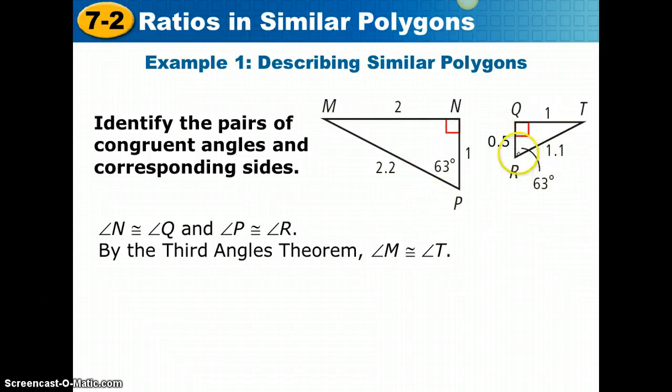Angle P is congruent to angle R because they're both 63 degrees. By the third angles theorem, angle M is congruent to angle T. Writing these three pairs of congruent corresponding angles satisfies the first part of the instructions.